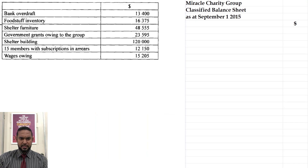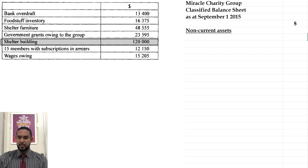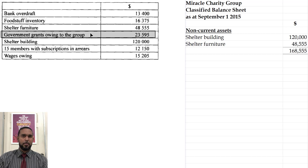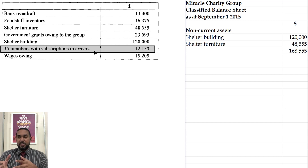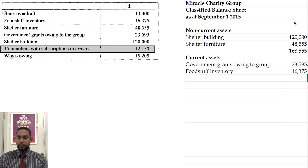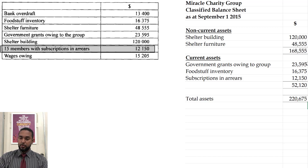We're going to take it in a regular format, starting with non-current assets, going to current assets, and then subtracting liabilities to give us what you call the accumulated fund — that's what nonprofit organizations call their capital. I'm seeing shelter furniture and shelter building for non-current assets. For current assets, I'm seeing foodstuff inventory, government grants owing to the group, and 15 members with subscriptions in arrears — that's almost like accounts receivable, which is a debtor. Total current assets come to $52,120.